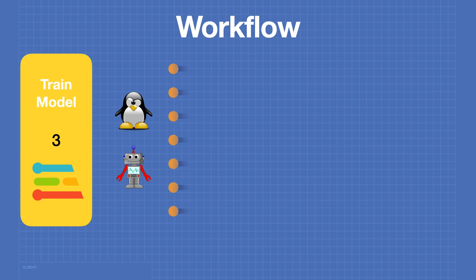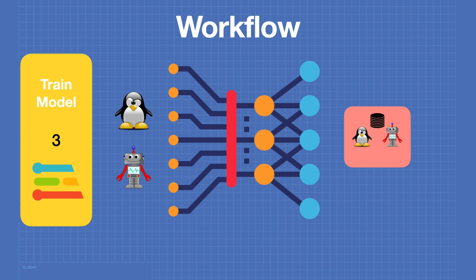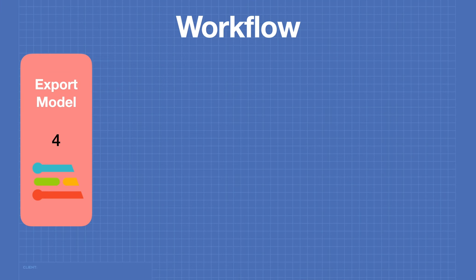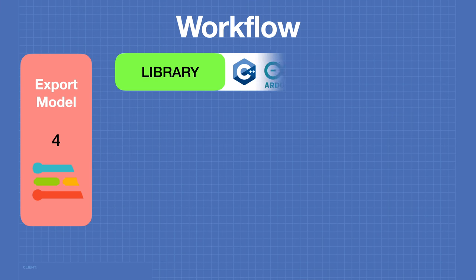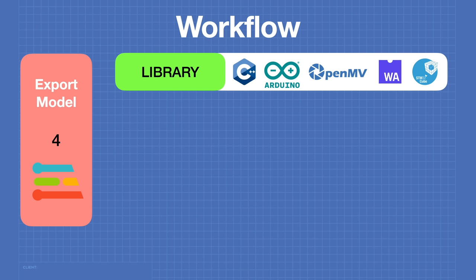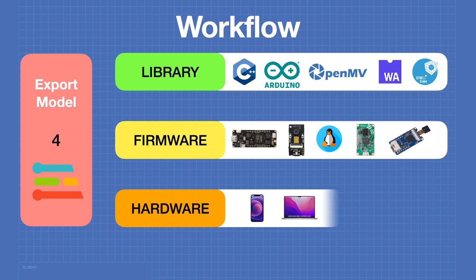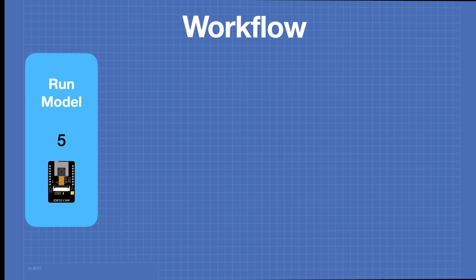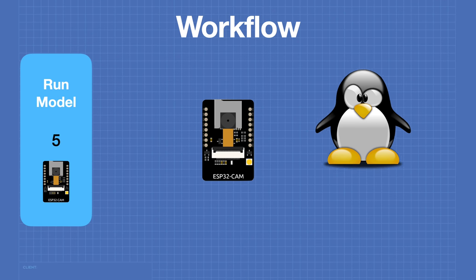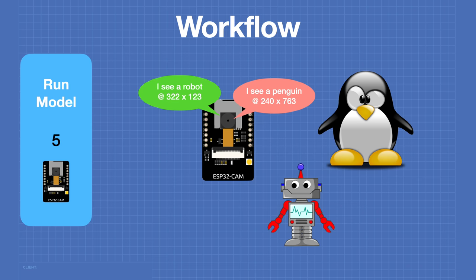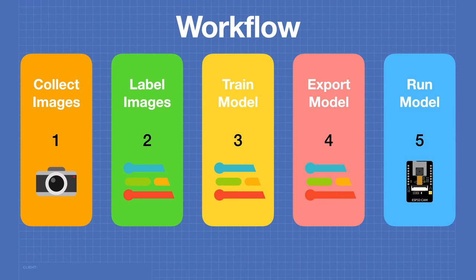In step three we take the collected images and use them to train a model, then run tests to determine accuracy. Once satisfied, we export the model. We can export it to a code library including an Arduino library for the ESP32 cam, as firmware for popular microcontroller boards including the ESPi, or as Linux firmware for single-board computers. We can also use hardware to test the model directly on your phone or computer. Finally, we export our model to the ESP32 cam and test it.